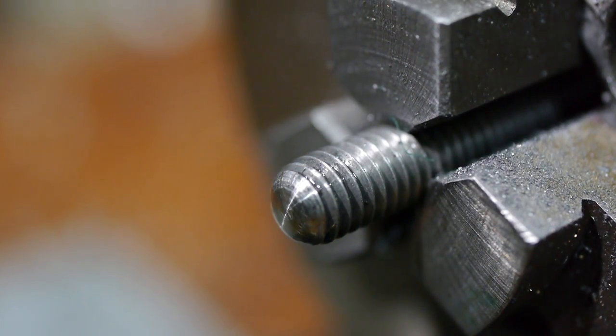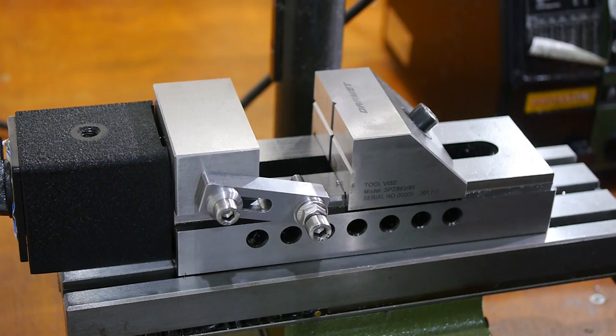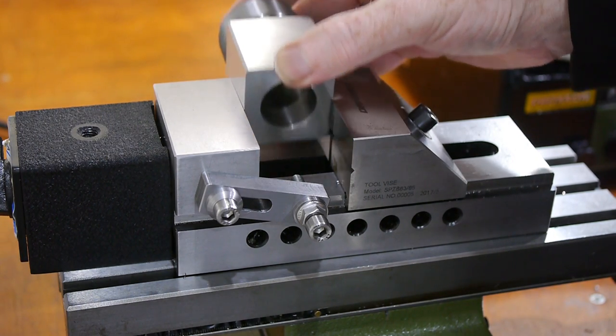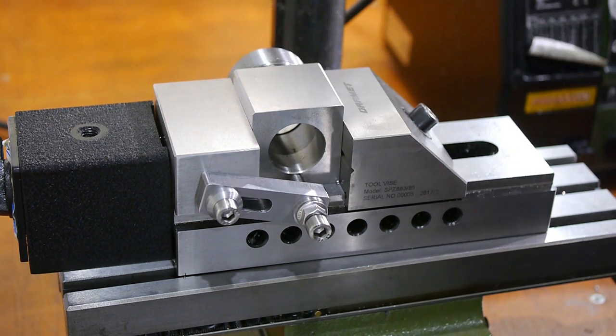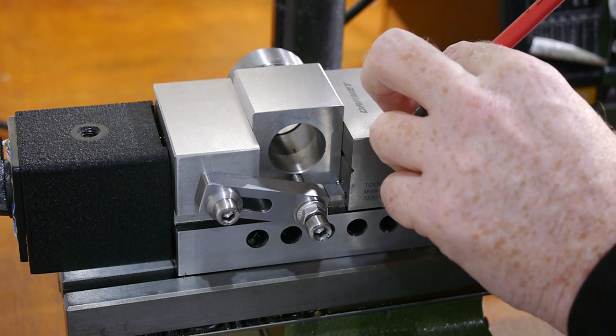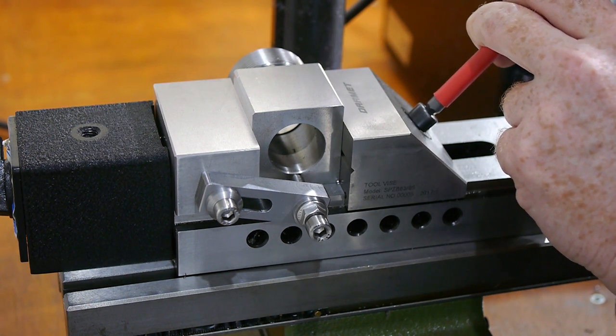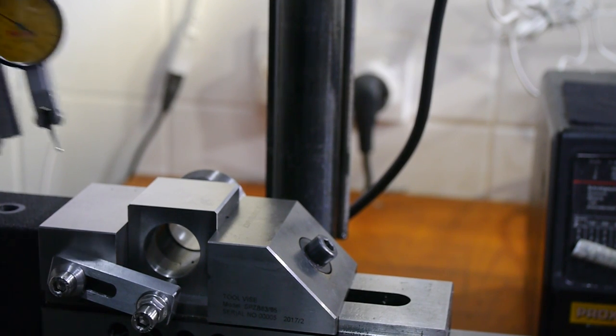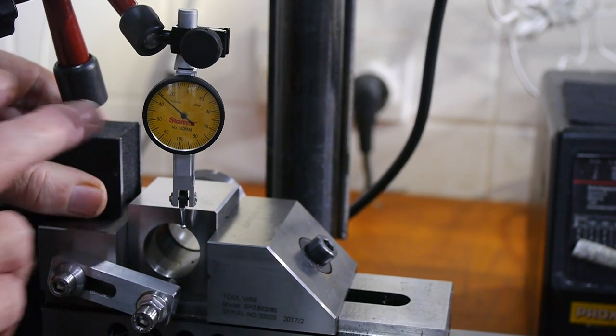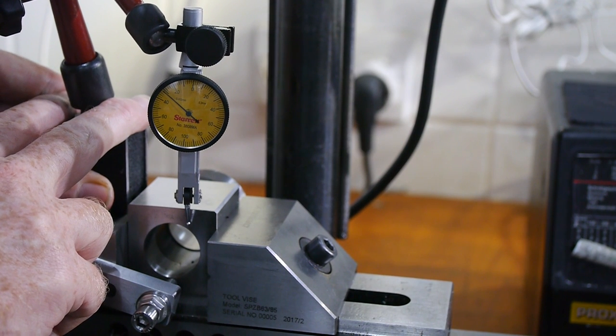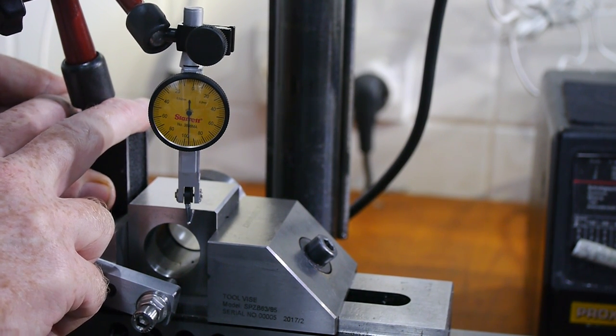I'll start with a collet block, pushed up against the stop, and gripped in the vise. This test indicator is set up with a tip against the collet block face, around the middle of its range.